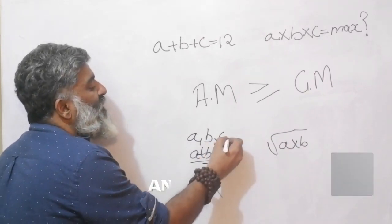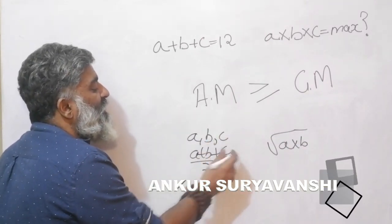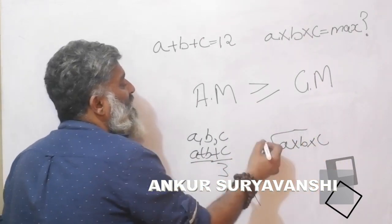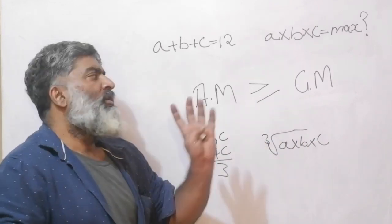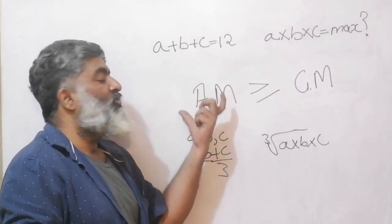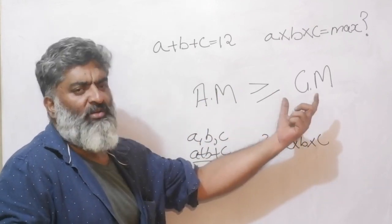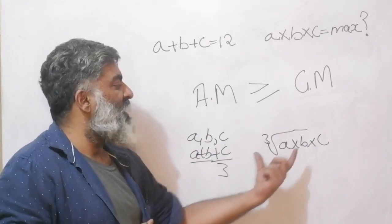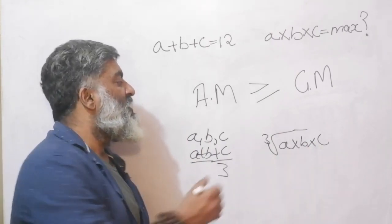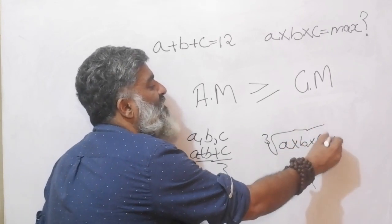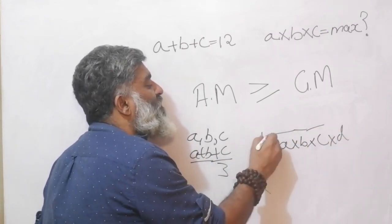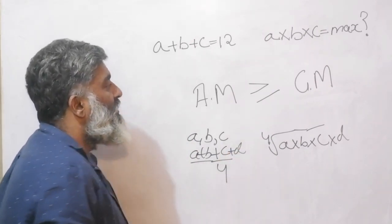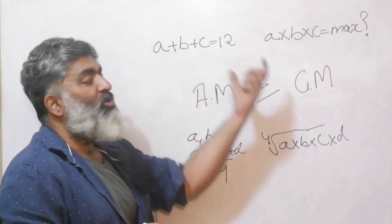For three terms a, b, c: the arithmetic mean is (a+b+c)/3, and the geometric mean would have a cube root. If there were four terms, I would use a fourth root and divide by four. So: two terms → square root; three terms → cube root; four terms → fourth root — and so on.